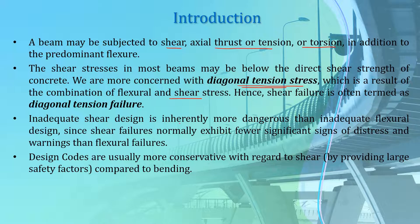Inadequate shear design is inherently more dangerous than inadequate flexural design, since shear failures normally exhibit fewer significant signs of distress and warnings than flexural failures. Design codes are therefore more conservative with regard to shear compared to bending. This conservatism is reflected in the safety factors: strength reduction factors for shear are always greater than those for bending.